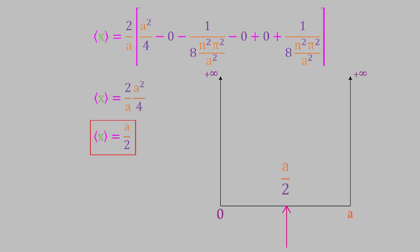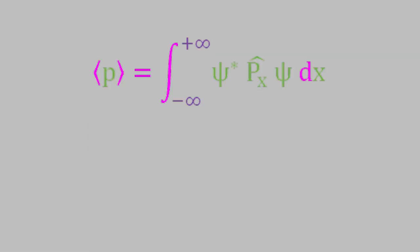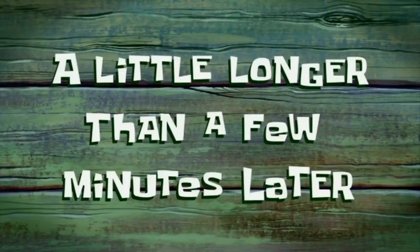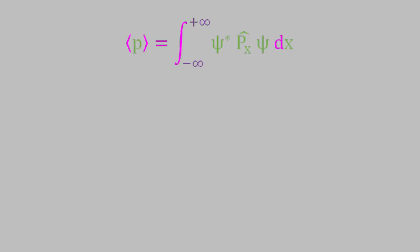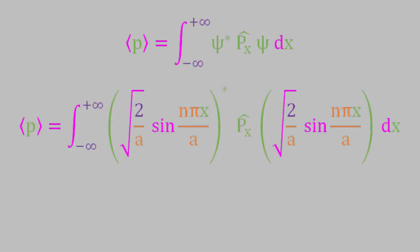Let's try calculating another property of this system: the momentum. Once again, we use this general equation to determine the expectation value, and here again we'll get results that make a lot of sense. You might like to pause the video and predict what the average momentum of a system like this should be. We have the same wave function as before, and postulate 2 tells us that the operator for momentum is negative i h-bar times the derivative with respect to x of whatever comes after it.